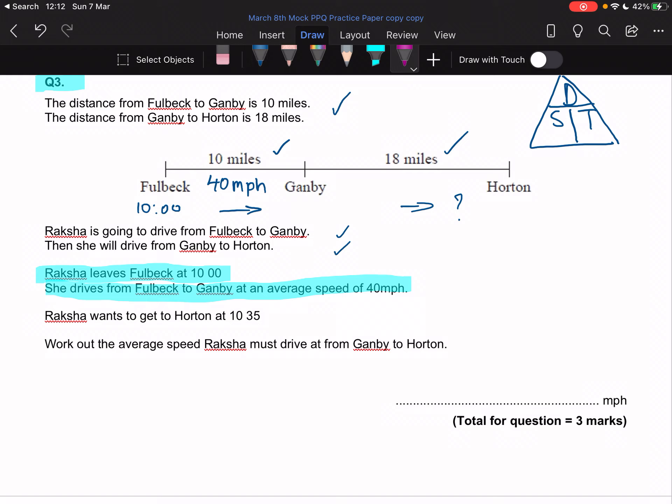For the first part of her journey, I've got her speed and distance, so I can work out the time. To work out time, I cover the time square and do distance over speed. So the distance is 10 miles, speed is 40 miles per hour. That simplifies to a quarter.